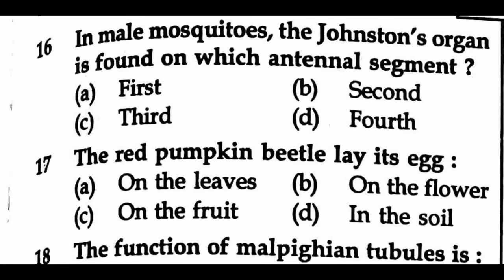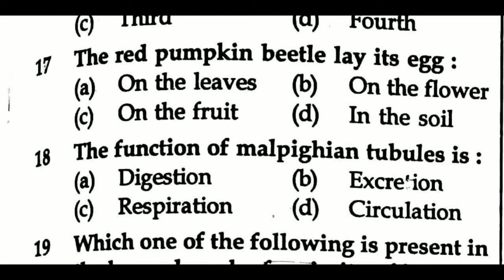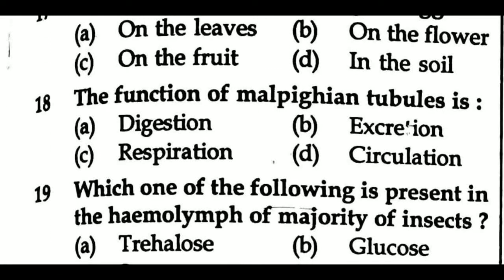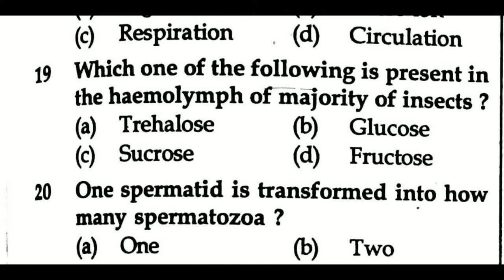Question 16: In male mosquitoes, the Johnston's organ is found on which antennal segment? Option A: first, Option B: second, Option C: third, Option D: fourth. Question 17: The red pumpkin beetle lays its egg — Option A: on the lips, Option B: on the flower, Option C: on the fruit, Option D: in the soil. Question 18: The function of malpighian tubules is — Option A: digestion, Option B: excretion, Option C: respiration, Option D: circulation. Question 19: Which one of the following is present in the hemolymph of majority of insects? Option A: trehalose, Option B: glucose, Option C: sucrose, Option D: fructose.